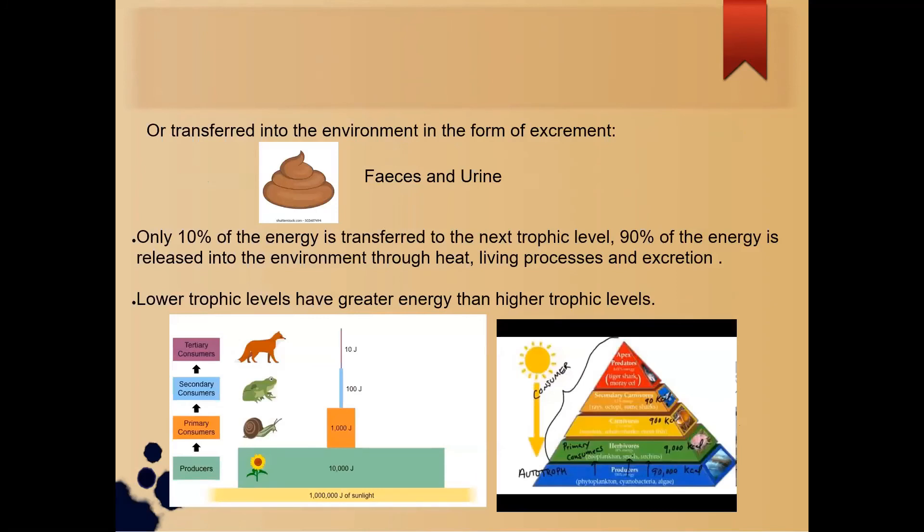or transfer into the environment in the form of excrement, for example feces and urine. Only 10 percent of the energy is transferred to the next trophic level. 90 percent of the energy is released into the environment through heat, living processes, and excretion. Based on the two diagrams below, you can see that the lower trophic levels have greater energy than higher trophic levels. Thank you.